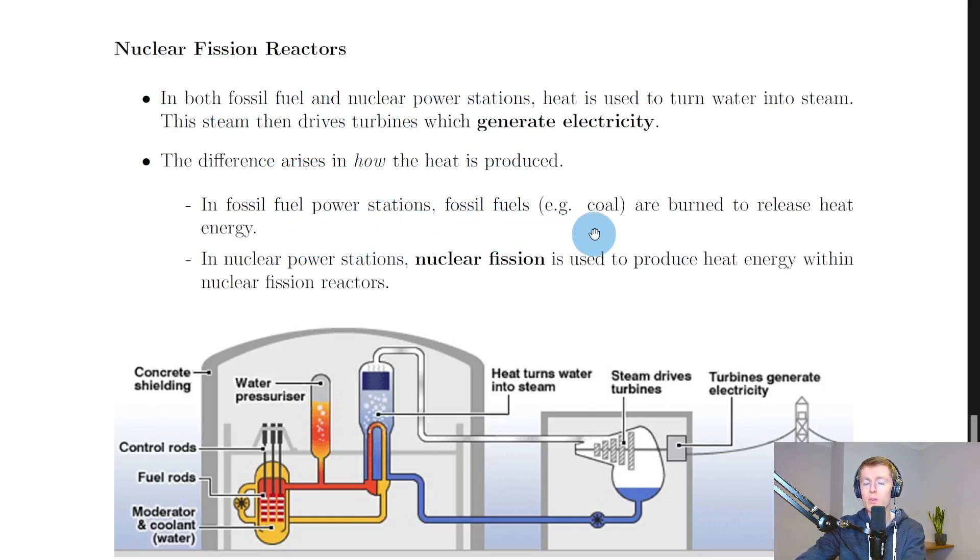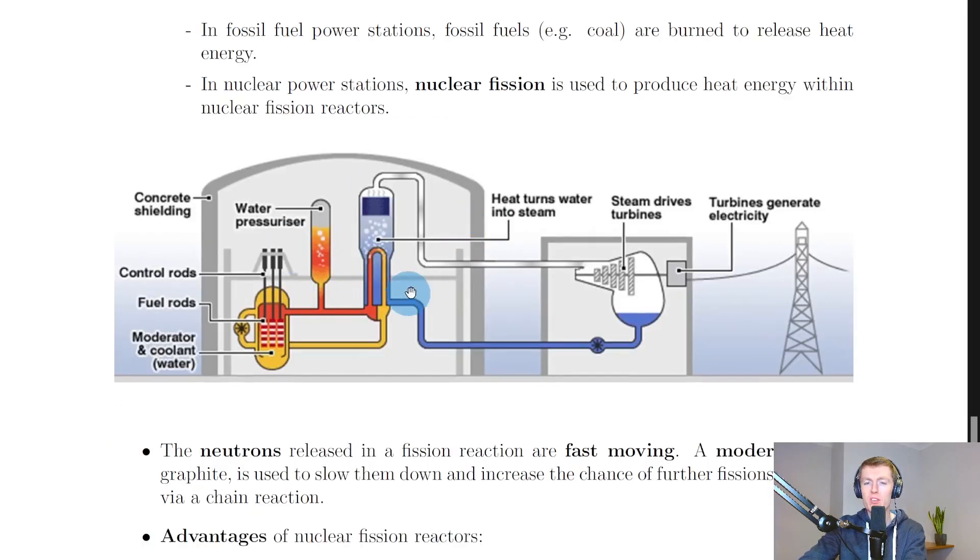It then says that the difference in these two power stations arises in how the heat is produced. In fossil fuel power stations, fossil fuels, for example coal, are burned to release heat energy. In nuclear power stations, nuclear fission is used to produce heat energy within nuclear fission reactors.